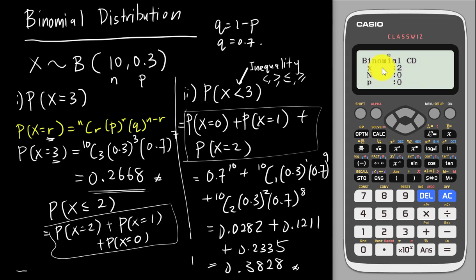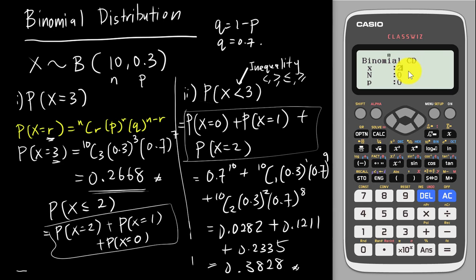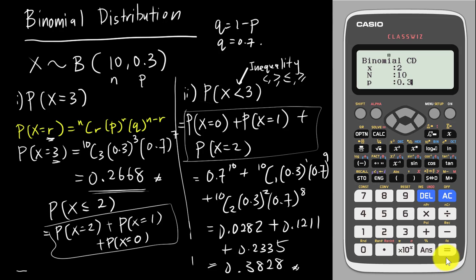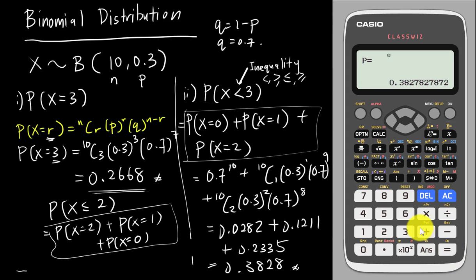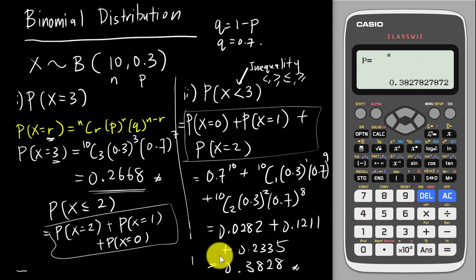Many students see x < 3 and just insert 3 into the calculator, which gives the wrong answer. You need to be very careful here. With n = 10 and p = 0.3, inserting x = 2 gives 0.3828 — exactly the same answer as the manual calculation.